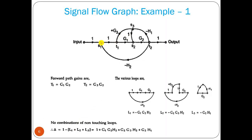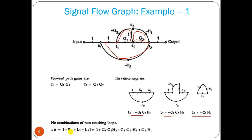Loop 1 has gain G1*G2*(−H2). We can have another loop with gain G3*G2*(−H2), that is L2. We have another loop with gain G2*(−H1). So we have a total of 3 loops. Delta equals 1 minus the sum of individual loop gains. Non-touching loops are not present here because all loops share common nodes.